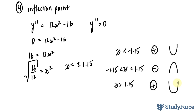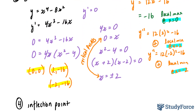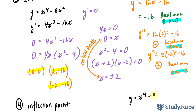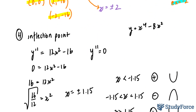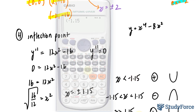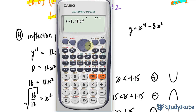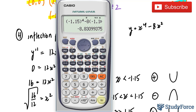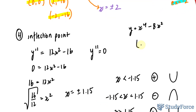Now we need to find the actual inflection points by substituting x equals plus or minus 1.15 into the original equation y equals x to the power of 4 minus 8x squared. Substituting negative 1.15 gives approximately negative 8.83, so there's an inflection point at (−1.15, −8.83). Substituting positive 1.15 gives the same y-coordinate, so another inflection point at (1.15, −8.83).